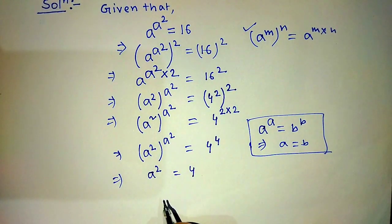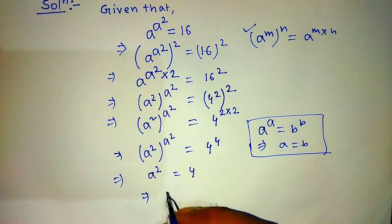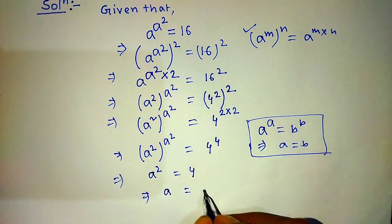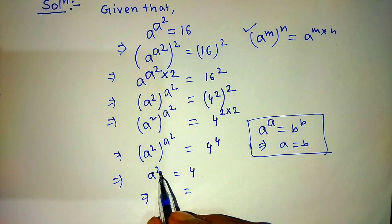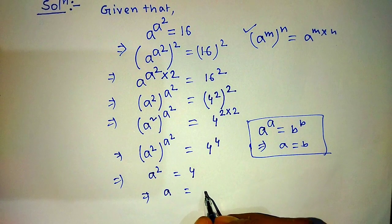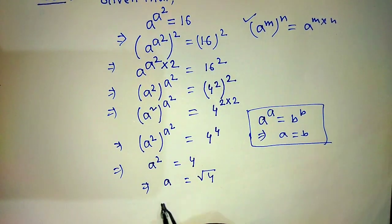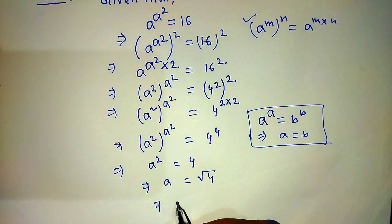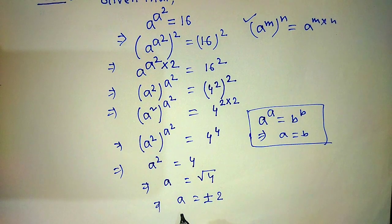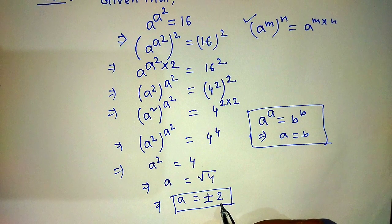After that, to transpose the power of a from left side to right side — on the left hand side we write a, and on the right hand side, if we transpose the power of a, we write the square root of 4. So the value of a will be plus minus 2. That means plus 2 or minus 2.